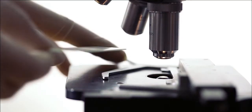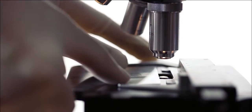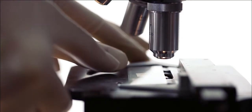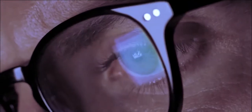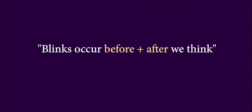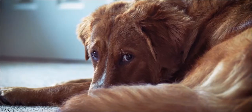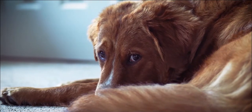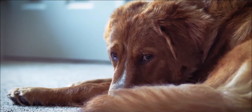We do not blink at random. Psychological studies have proven Murch's theory right. An experiment conducted at Pittsburgh University in 2008 suggested that blinks occur before and after we think. They occur before we think in order to take a breather and prepare to receive information, and they occur after receiving information to take it in and process it.